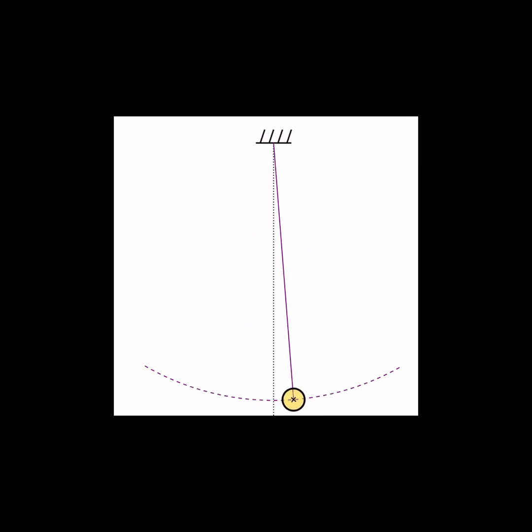Notice that as the pendulum swings, it will move from one height on one side to its low point and back to the same height on the other side. That makes sense since we assumed the system was ideal without friction, so there should be no energy losses as it moves.